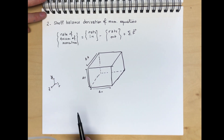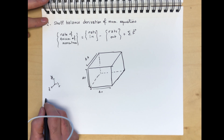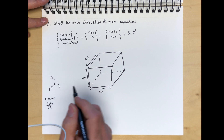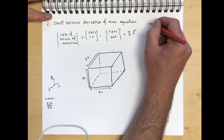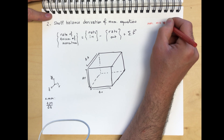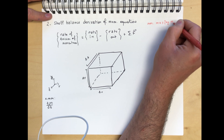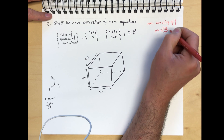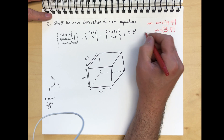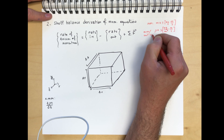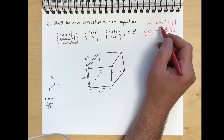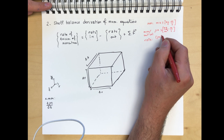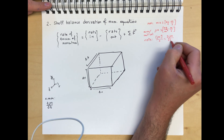The rate of accumulation of x-momentum is easy to obtain. For x-momentum we have d(ρu)/dt. Recall that ρu has units of kilograms per meter cubed times meters per second, which is momentum per unit volume. The rate is therefore ∂(ρu)/∂t.